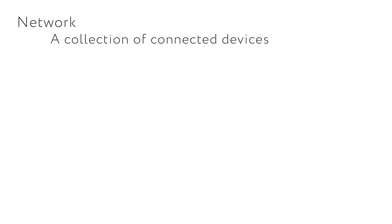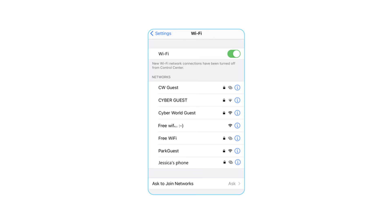A network is a collection of connected devices. It can include computers, printers, or the internet. A network can allow multiple devices to connect. So what are the available networks in this picture? What differences do you notice about them? What do the symbols mean next to each network?